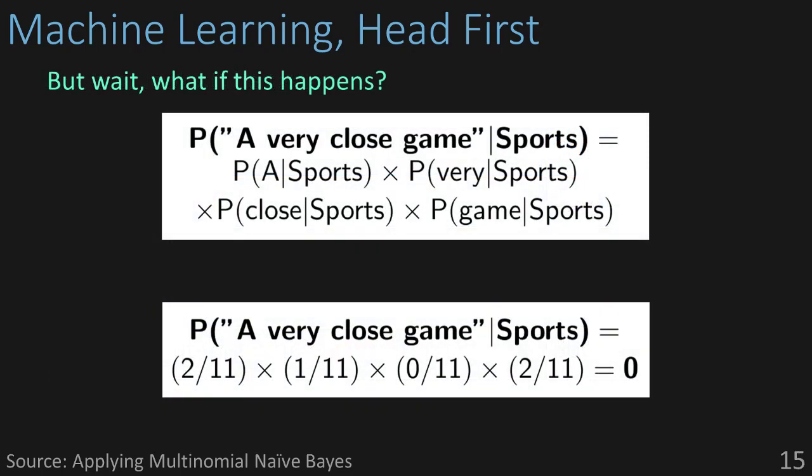Next, we just plug in our counts. We have 11 total words in sports, so each of the counts will be divided by 11 to get their probability. When we do the same for not sports, we'll divide their counts by the total number of words in that class. But wait — we already have a problem here. We've never come across the word 'close' in sports before. So having zero divided by 11 gives us zero, and multiplying that by everything will also give us zero as our final result. That's not good.